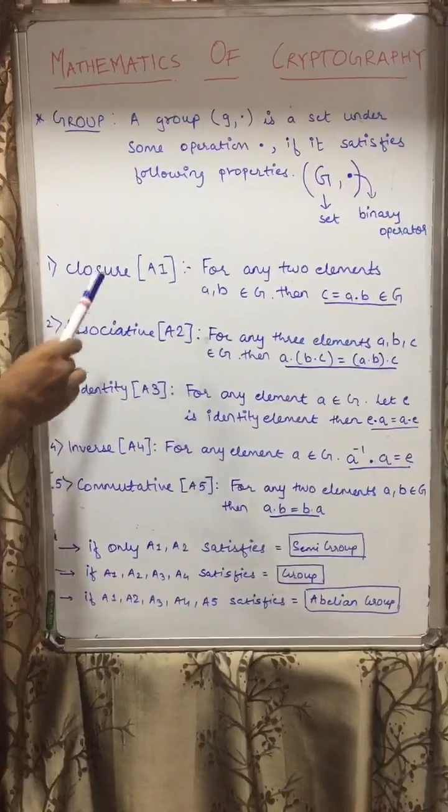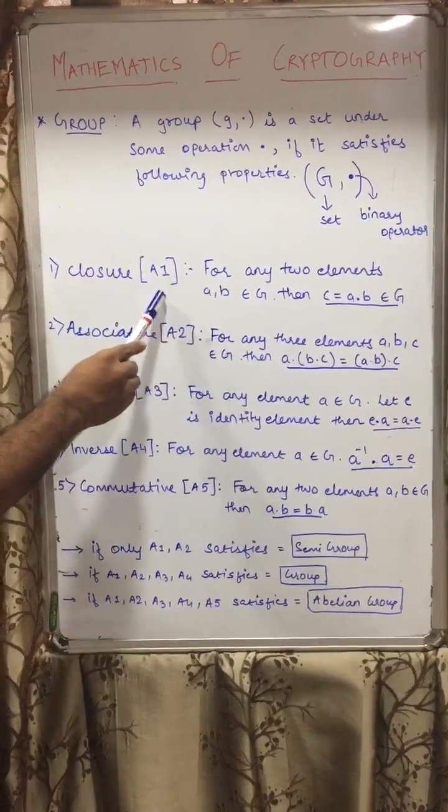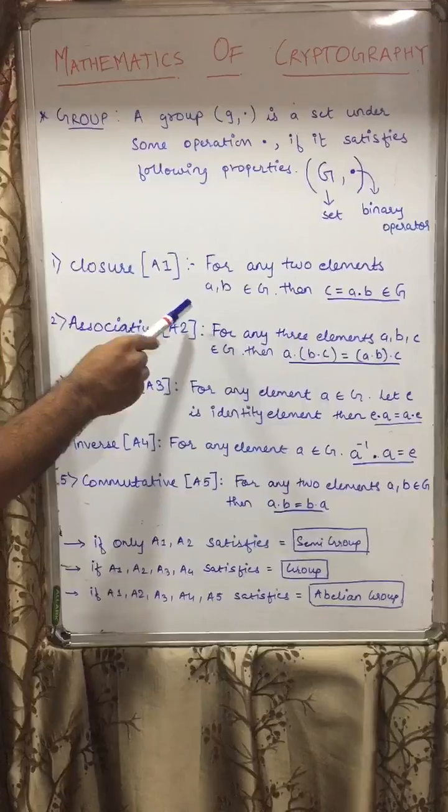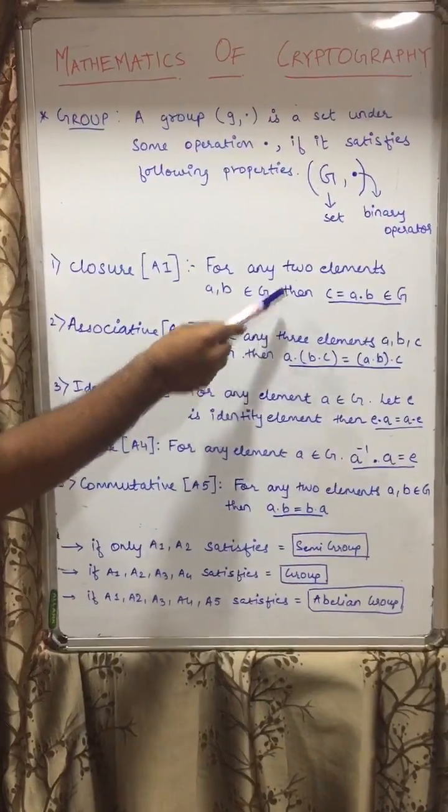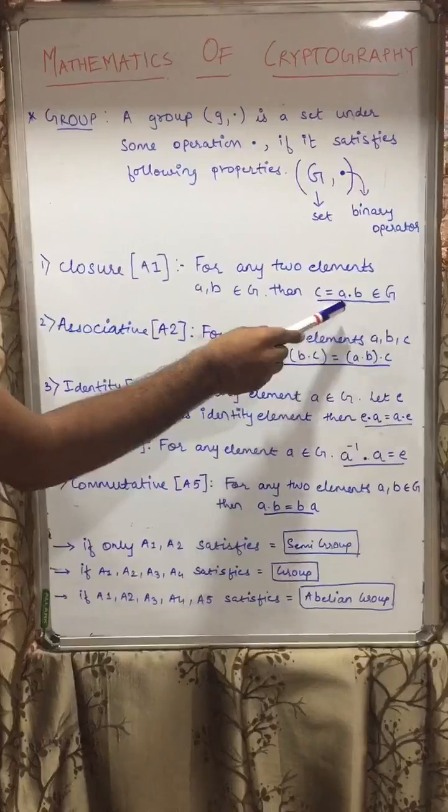Okay, so first of all let us talk about closure property, closure A1. Closure property says that for any two elements a, b belongs to G, then c = a · b also should belong to G, our set.